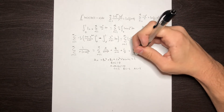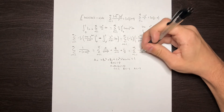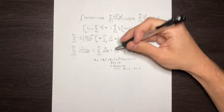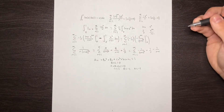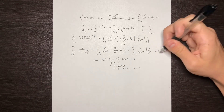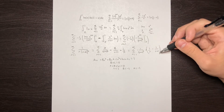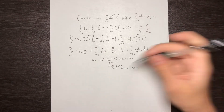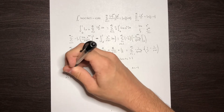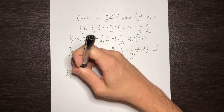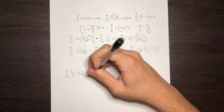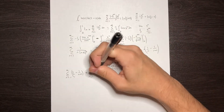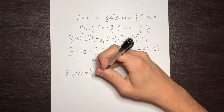Plugging the partial fractions back in, this equals the sum from n equals 1 to infinity of negative 1 over n plus 1 squared plus 1 over n minus 1 over n plus 1. I immediately recognize the second part as a telescoping series, which converges, and the first part converges as it is equivalent to the sum of 1 over n squared. So I'll split this into two separate summations: the sum of 1 over n minus 1 over n plus 1, and the sum of negative 1 over n plus 1 squared.